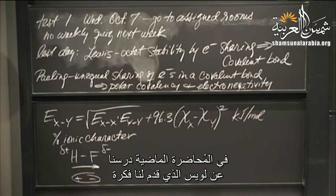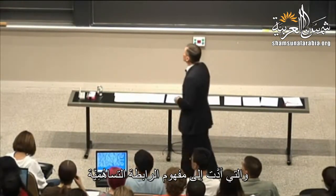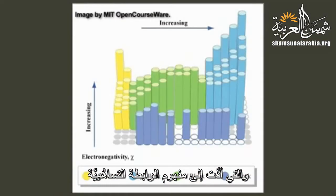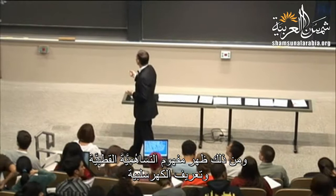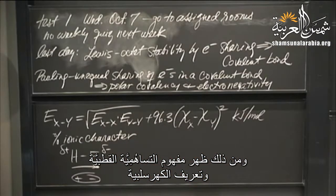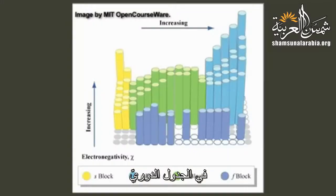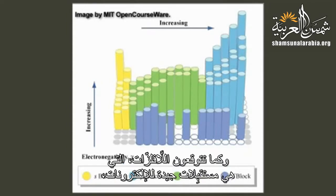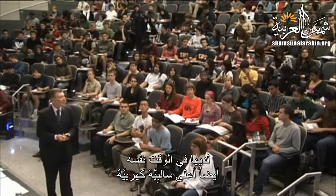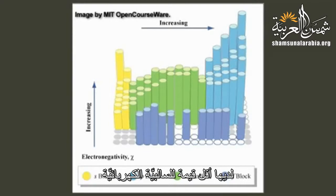Last day, we looked at Lewis, who gave us the notion of achieving octet stability by electron sharing, which led to the concept of covalent bond. Pauling helped us understand the energetics of covalent bonding by putting forth the idea that in a heteronuclear molecule there's unequal sharing of electrons. Out of that emerged polar covalency and the definition of electronegativity — a measure of the pull an atom has for electrons within a covalent bond. Nonmetals have the highest electronegativity; metals have the lowest.